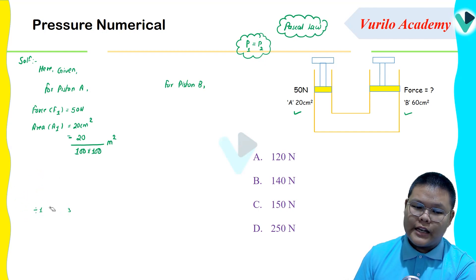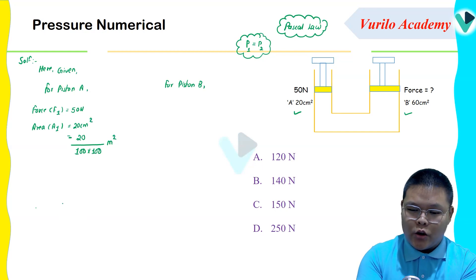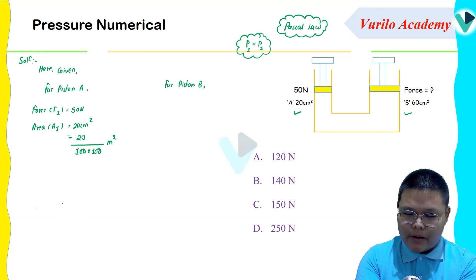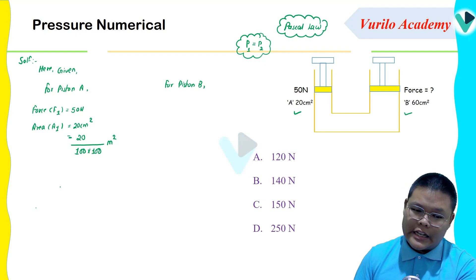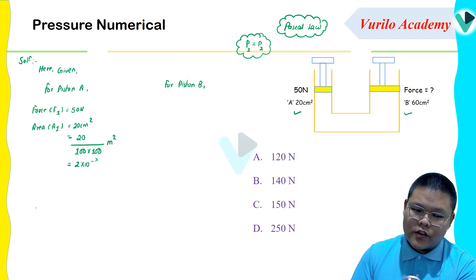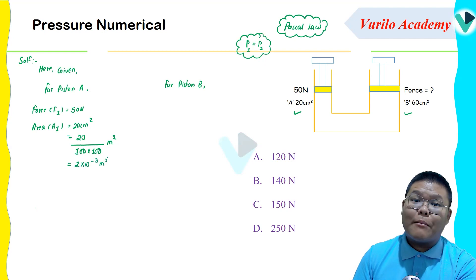Calculate your math: 20 divided by 100 into 100, to 10,000 — cancels out. So area A1 is 2 into 10 to the power minus 3 meters squared.